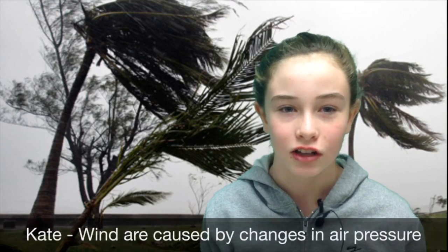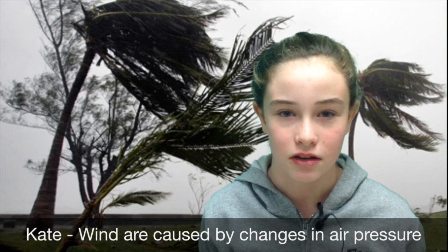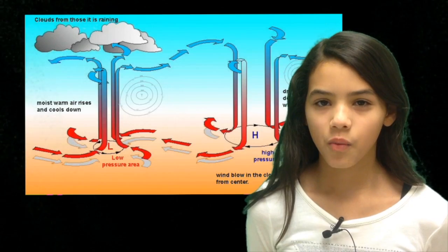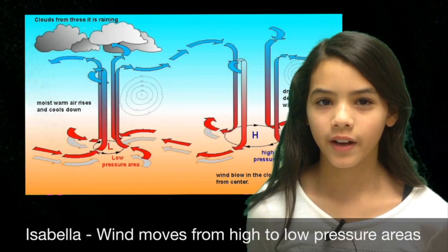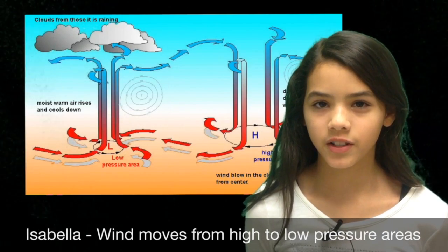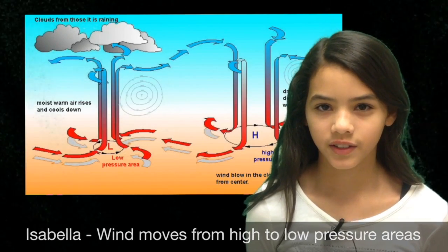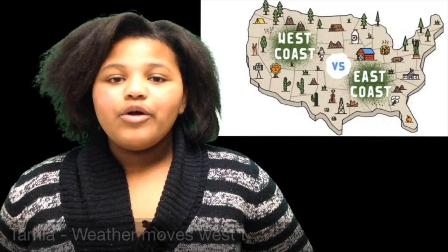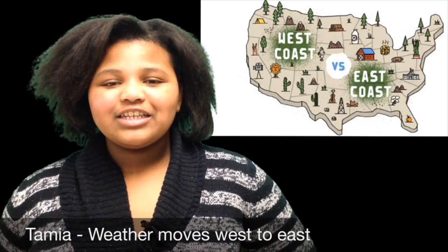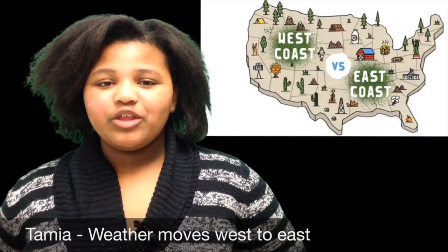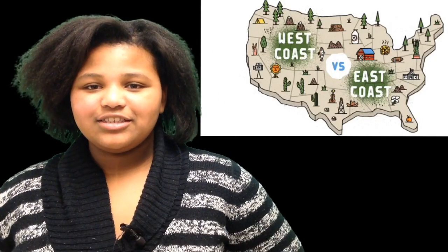Winds are caused by changes in air pressure. Wind moves from areas of high pressure to low pressure. Weather in the United States tends to move from west to east.